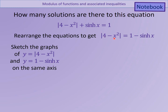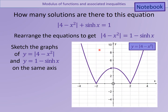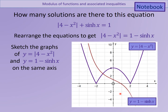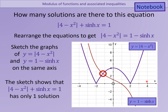What does the modulus of 4 minus x squared look like? Well, I know 4 minus x squared looks like that - it's going to go up. So what I'm going to end up with is any of the negative parts just here become positive, so we end up with that shape. We know that sinh x is a graph that goes up like this. The minus sinh x is going to do the opposite, so it's going to go down like that, and I'm also adding one to it. As long as you've got a rough sketch of it, you notice that it's only going to cross just once. And because it crosses just once, that means it's got exactly one solution.